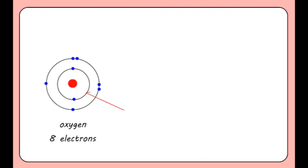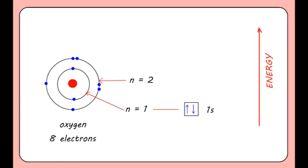Two electrons in shell n equals one, that's the innermost shell, and six electrons in shell n equals two. The innermost shell n equals one is made up of only one S orbital. It can therefore accommodate a maximum of two electrons, providing the spins are opposite.